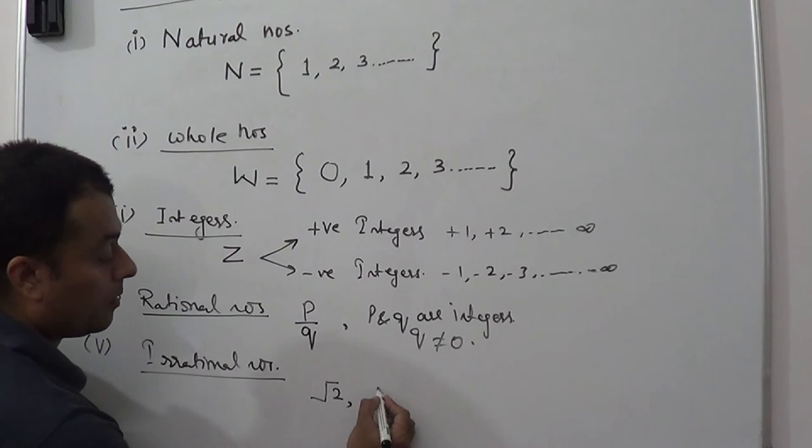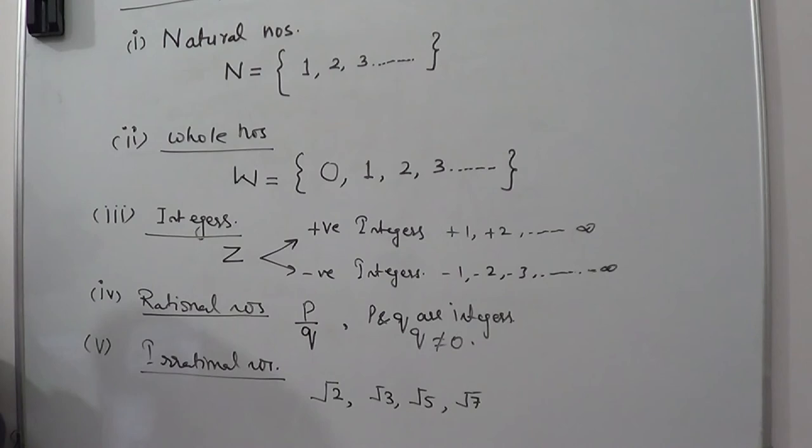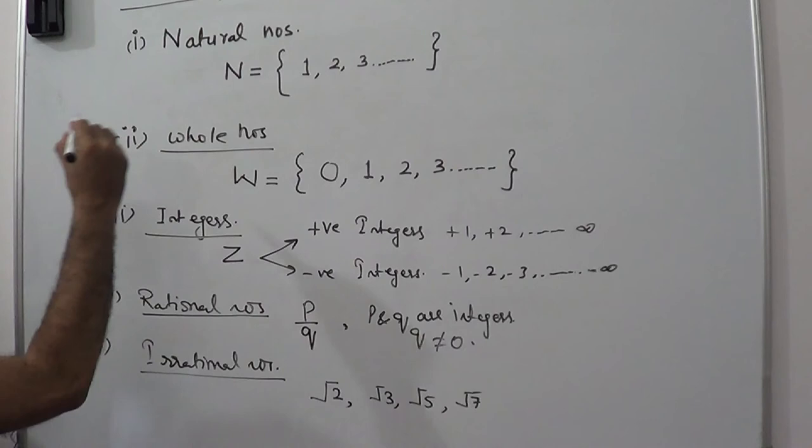For example, these numbers are root 2, root 3, root 5, and root 7. Such numbers are known as irrational numbers.